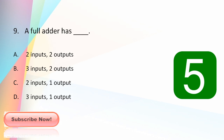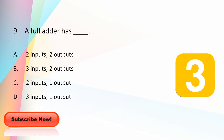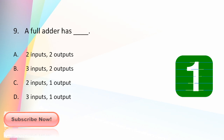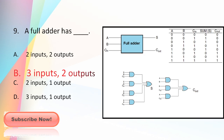A full adder has: two inputs and two outputs, three inputs and two outputs, two inputs and one output, or three inputs and one output? The answer is three inputs and two outputs. A full adder adds two bits plus the carry from the previous stage — inputs A, B, and carry-in — and produces two outputs: the sum and carry-out.